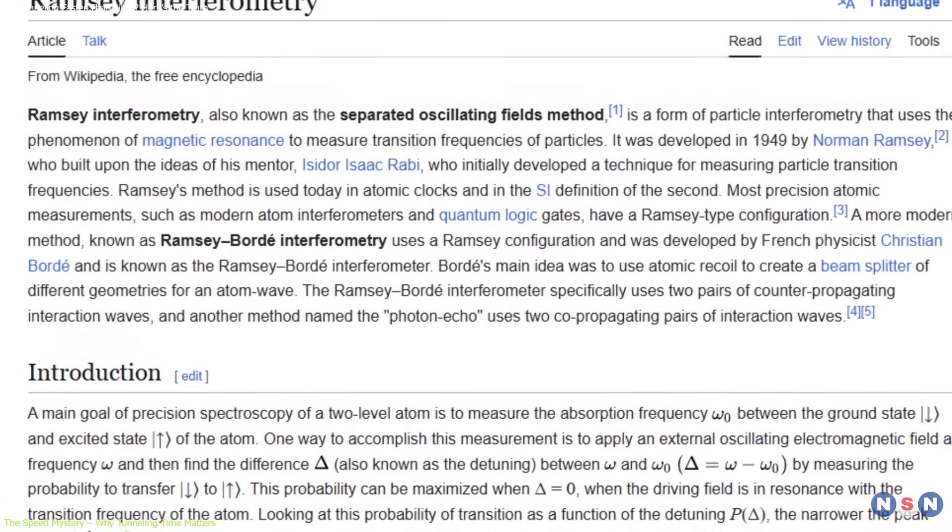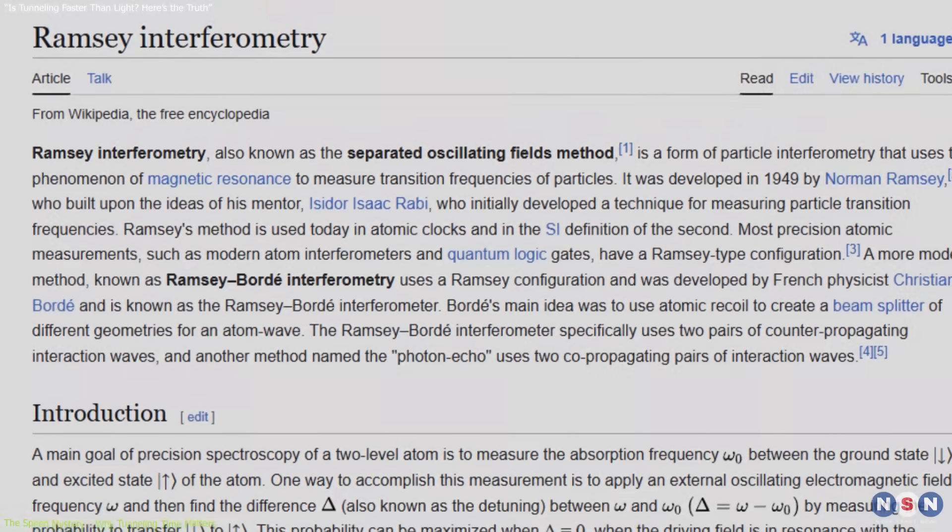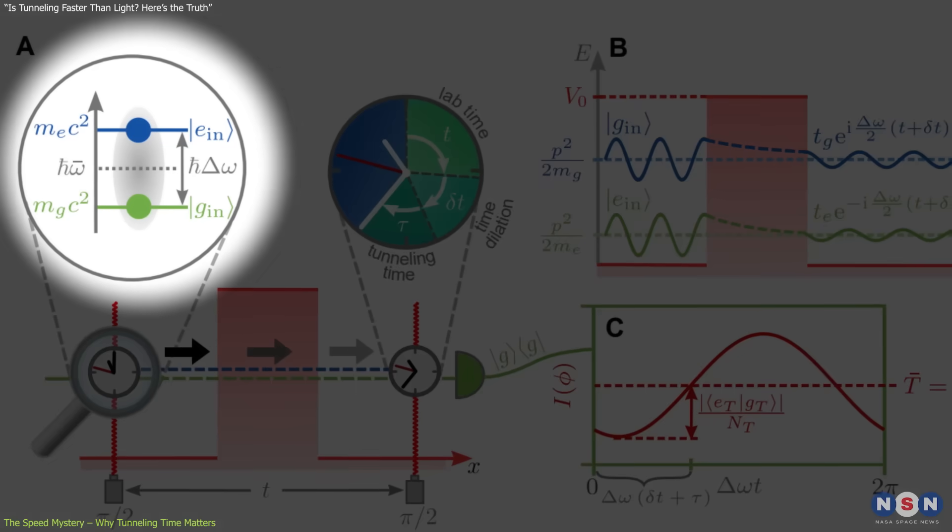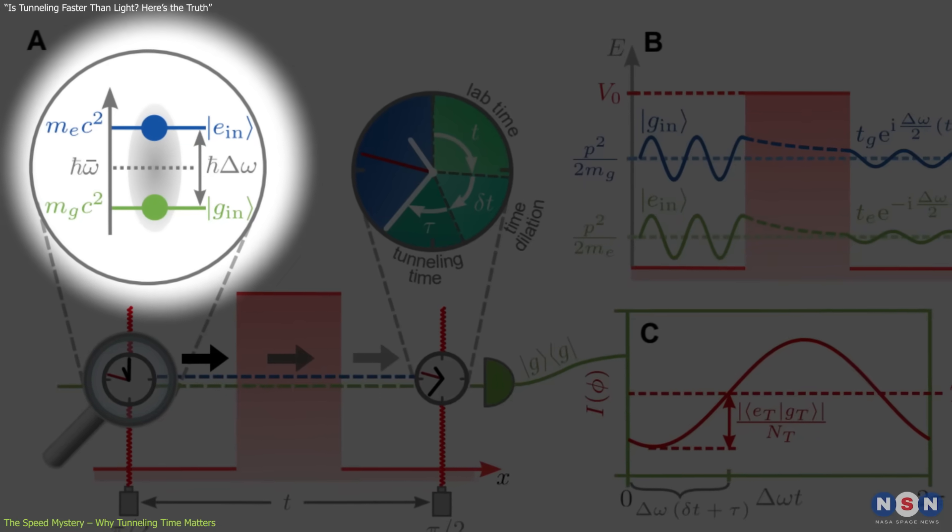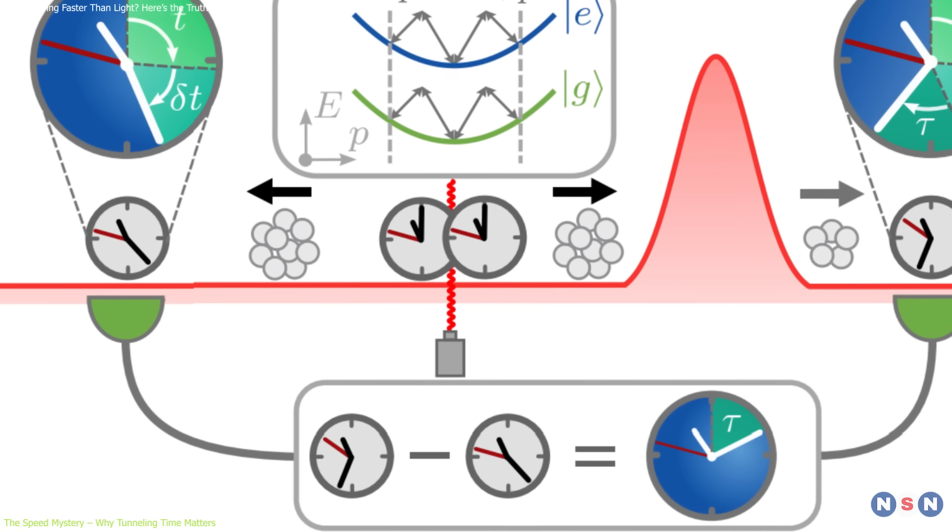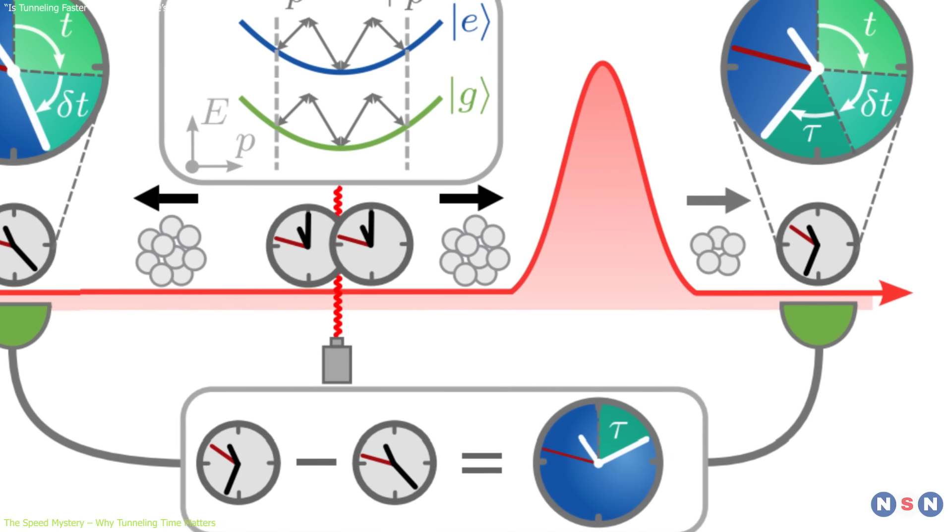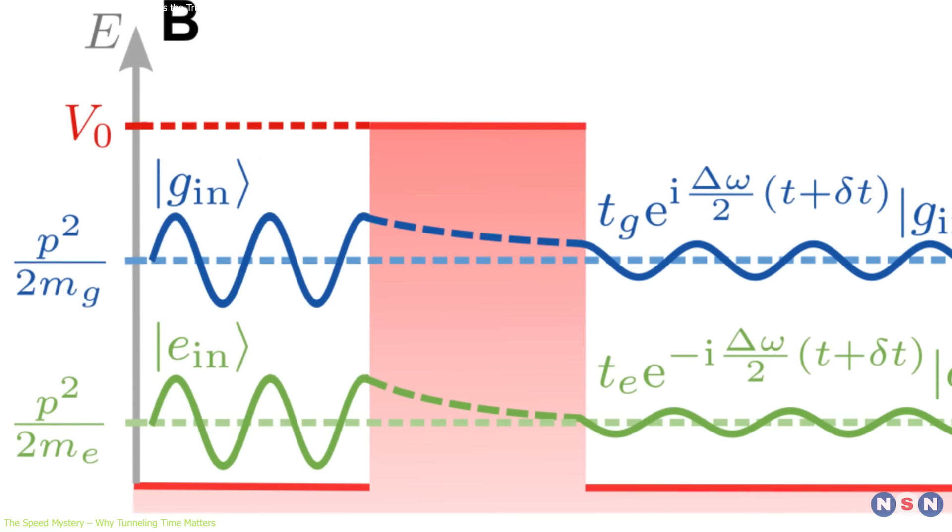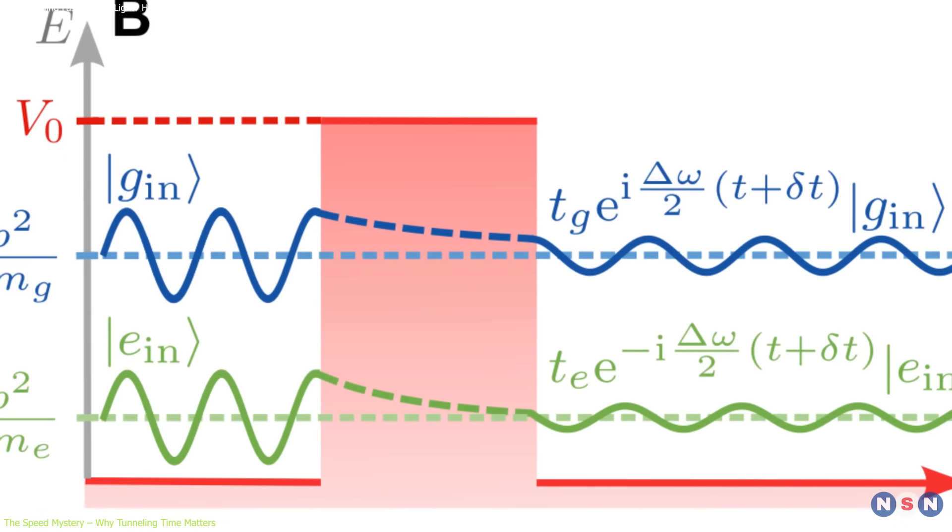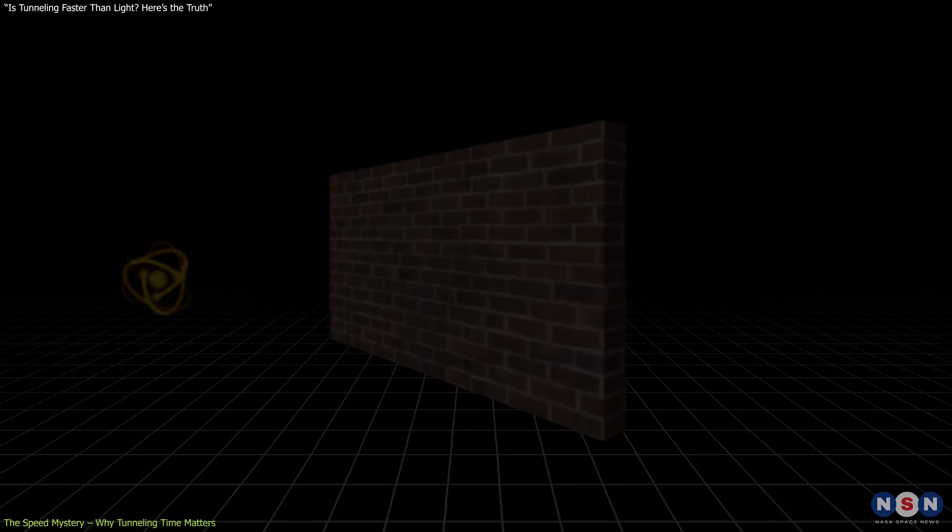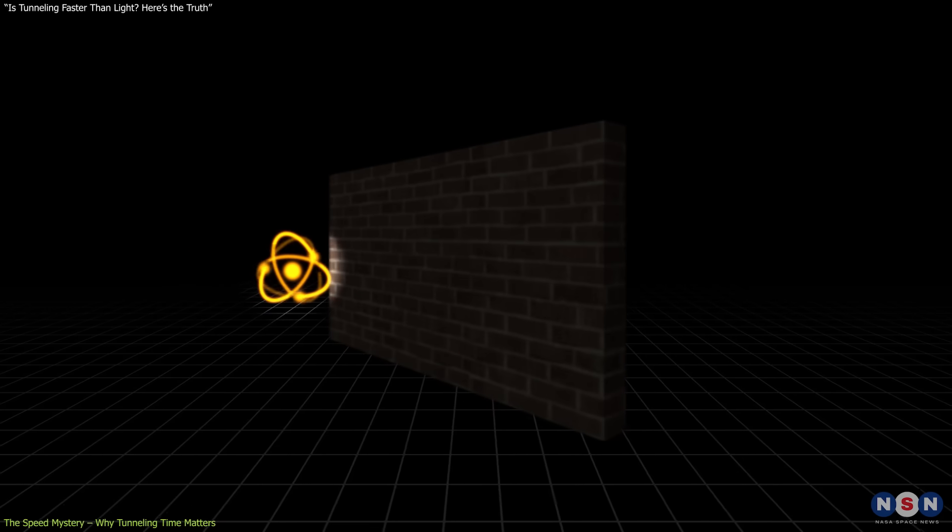Their method builds on the principles of Ramsey interferometry, commonly used in atomic clocks. By initializing atoms in a superposition of two internal states, these researchers transformed each atom into a miniature quantum timepiece. The core innovation is that phase shifts between internal energy levels reveal how much time was spent tunneling, without ever needing to track the particle's position or assign it a velocity.